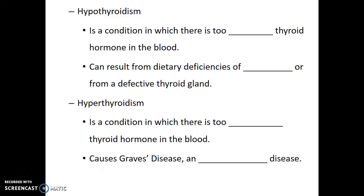Hypothyroidism is a condition in which there is too little thyroid hormone produced. This can result from a dietary deficiency of iodine or from a defective thyroid gland. Iodine is needed for the production of certain types of thyroid hormones, and if an individual does not receive enough of this trace nutrient in their diet, it can cause the swelling of their thyroid gland, known as a goiter, along with the underproduction of thyroid hormone. It's for this reason that in most developed countries, trace amounts of iodine are added to table salt — this is why some salt is labeled as being iodized.